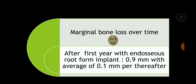There is always a marginal bone loss over time. You can tell the patient they will lose some bone over time, but the amount is constant and very minimal. After the first year of placing an implant, bone loss is about 0.9 millimeters, with an average of 0.1 millimeter lost per year thereafter. This applies to healthy, non-smoking individuals.